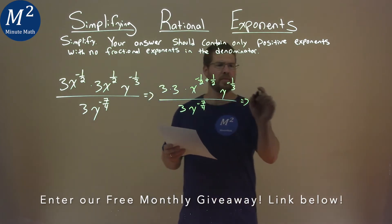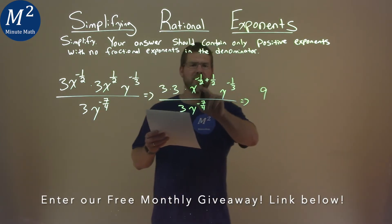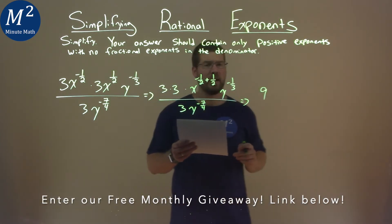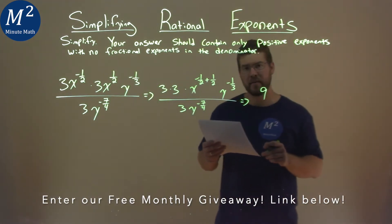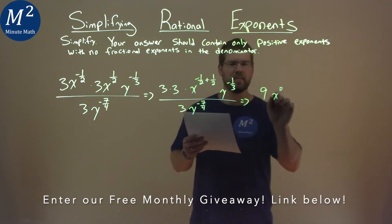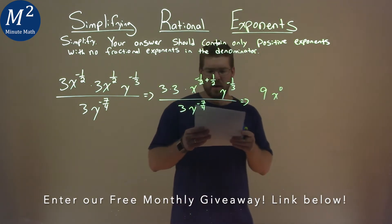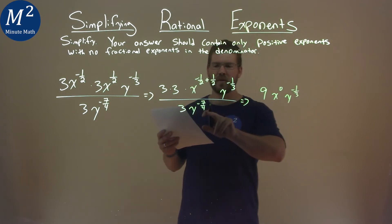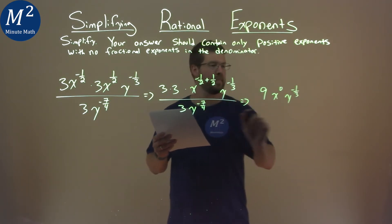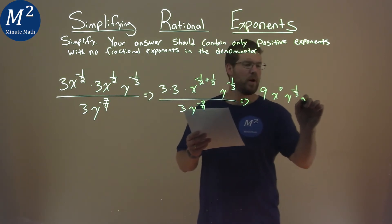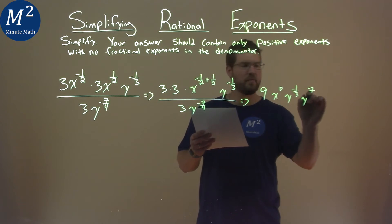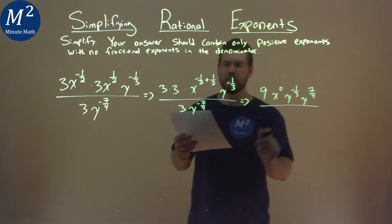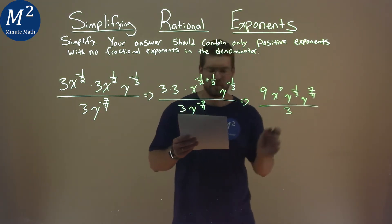But we can simplify this a little more. 3 times 3 is 9, and then x to the negative one-half power plus one-half — that's just x to the zero power. From there, we have a y to the negative one-third, and let's go bring this y to the numerator. That's going to be y to a positive seven-fourths power, and that's going to be all over that 3 that's left over.